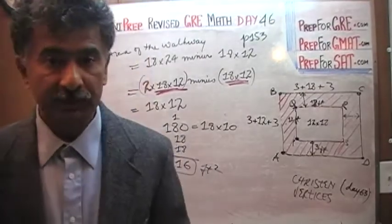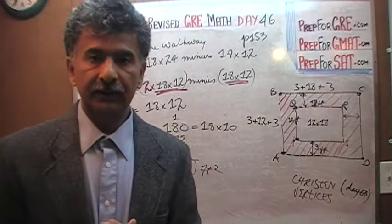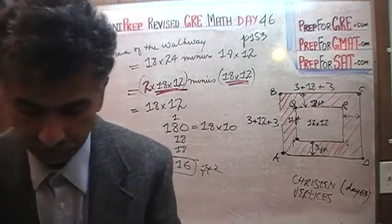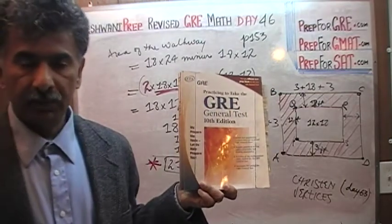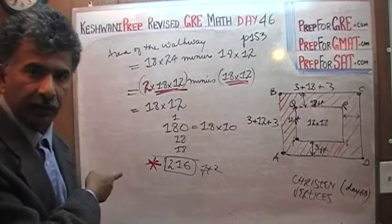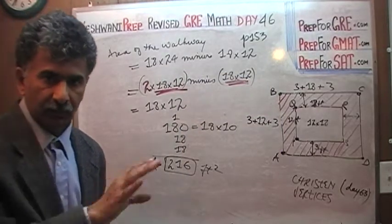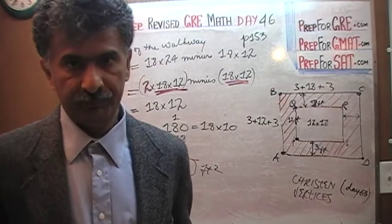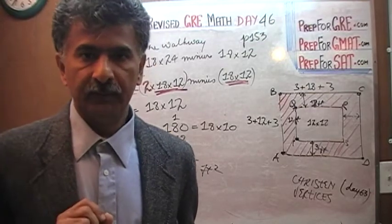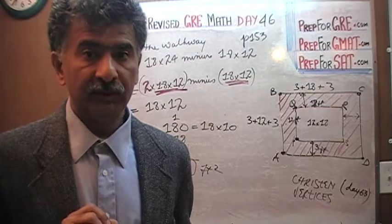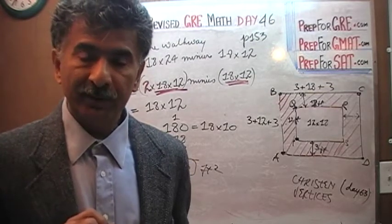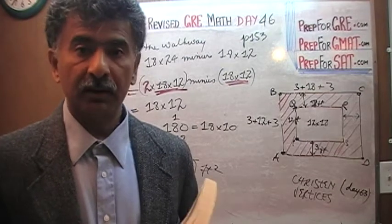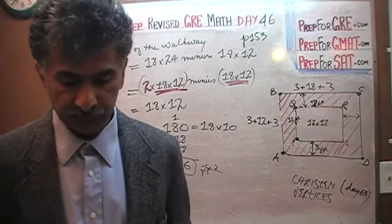I was looking for which answer choice — A, B, C, D, or E — but it doesn't apply here because these are open-ended questions, not multiple choice. These are a new type of question on the revised GRE where you put in your own answer. The second new type has multiple correct answer choices, and you must check all correct ones — if 5 of 7 answer choices are correct, you must mark all 5 to get credit.